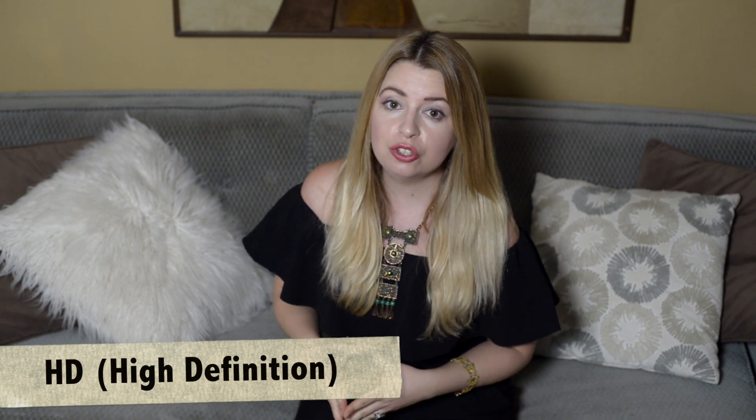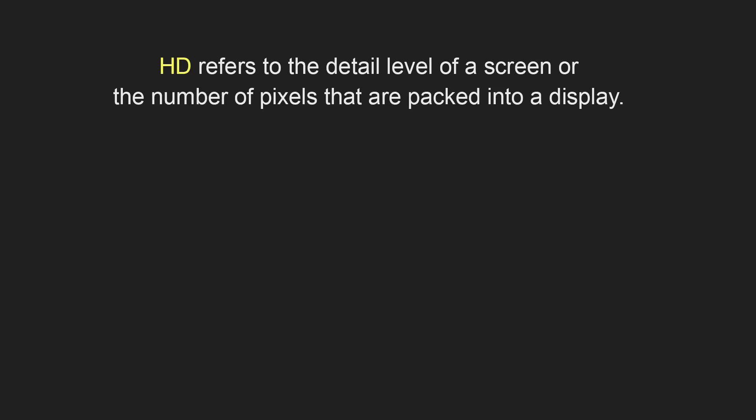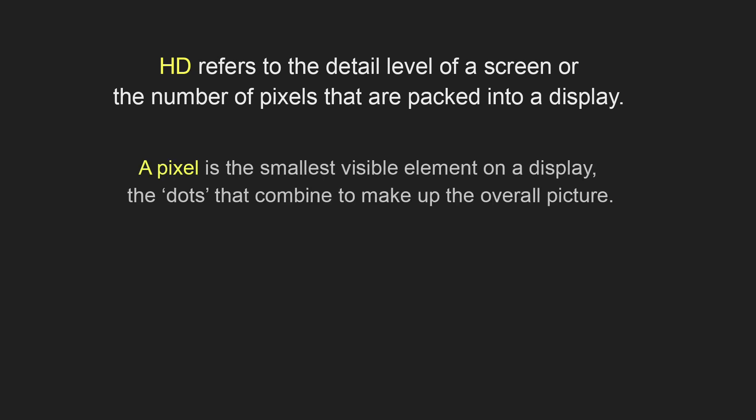The other feature is the ability of the camera to shoot high-definition movies. HD, or high definition, refers to the detail level of the screen or the number of pixels packed into a display. A pixel is the smallest visible element on a display — the dots that combine to make up the overall picture.